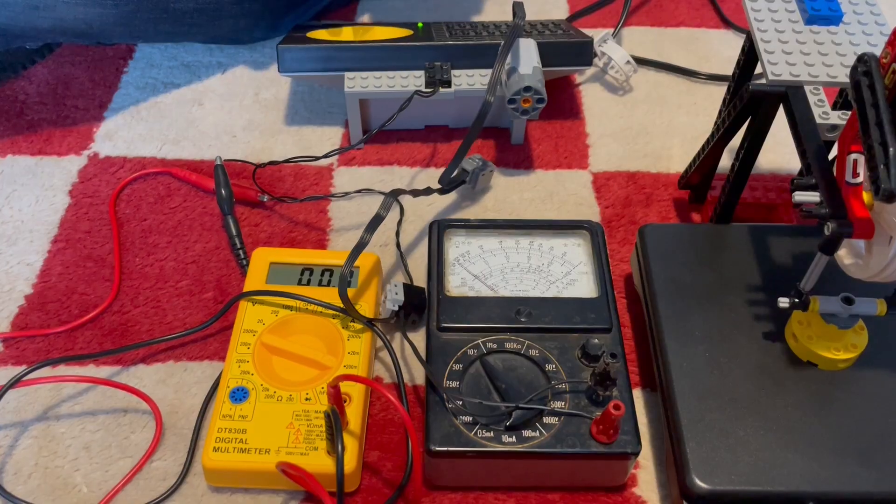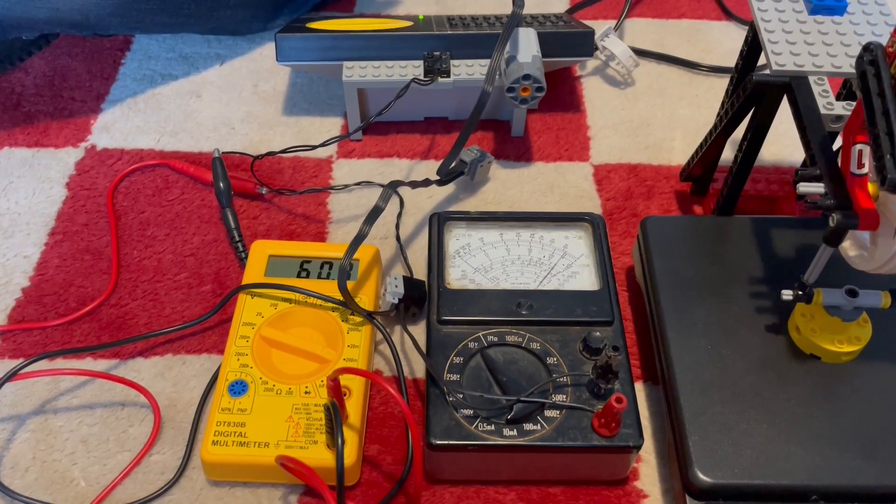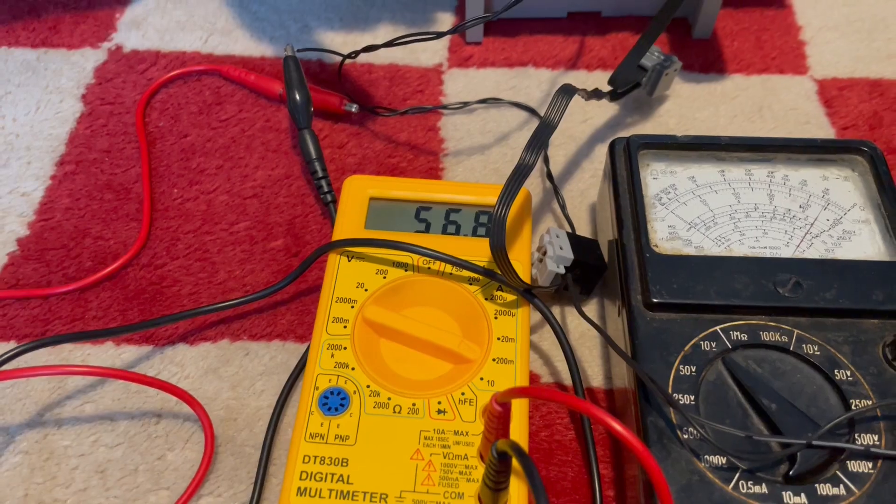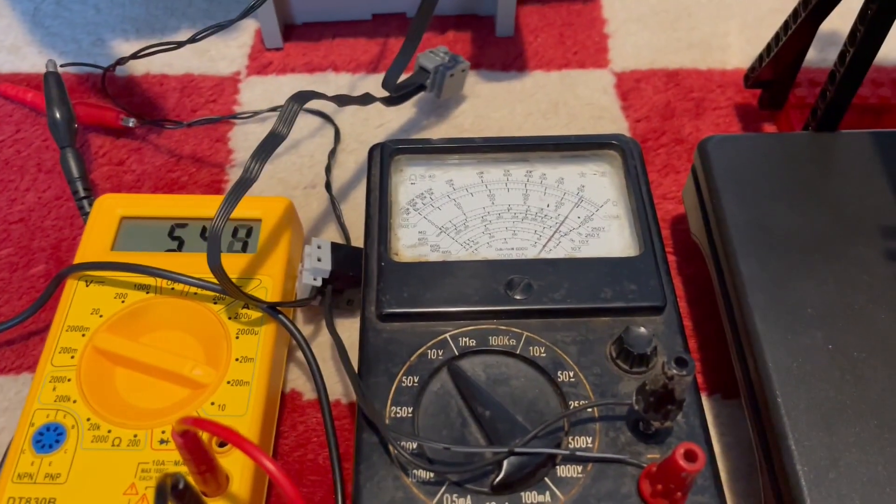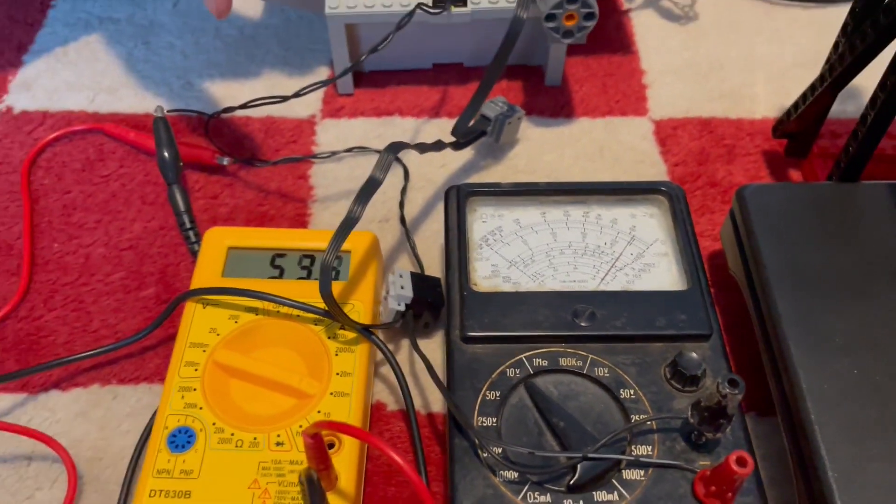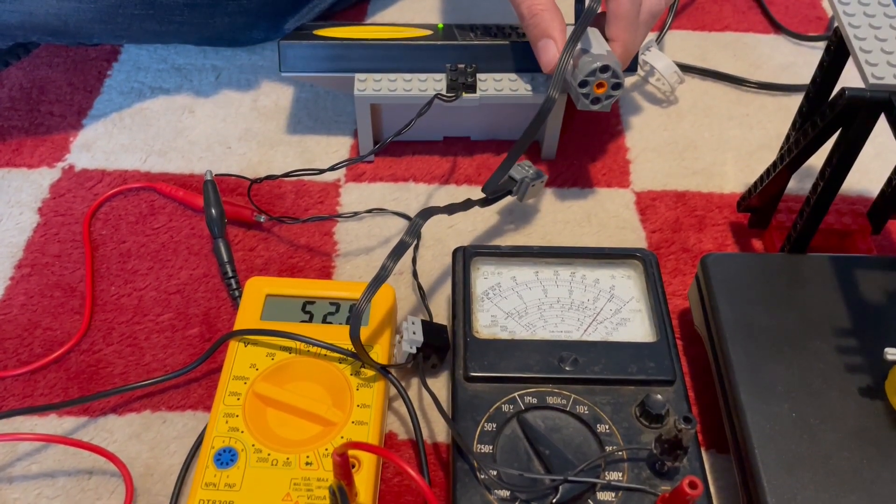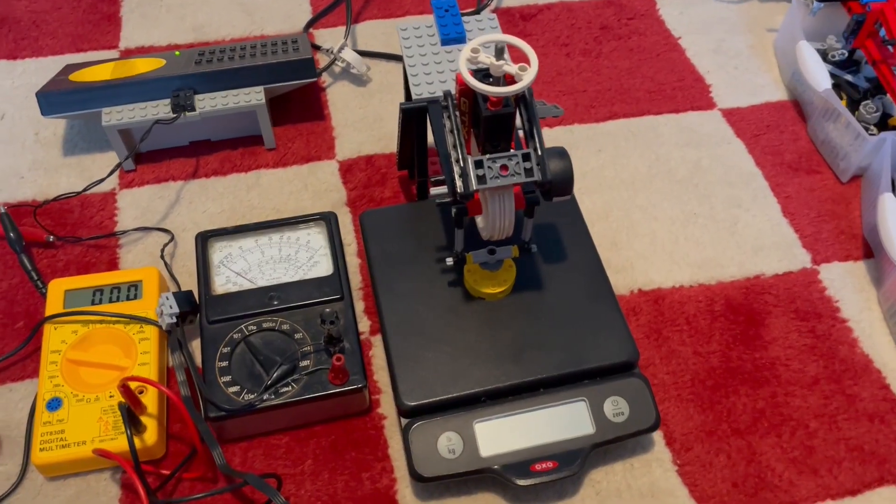Here we have a multimeter on voltage, wired in parallel, and a multimeter on current, wired in series. Multiplying the voltage and the current will give us the input power.